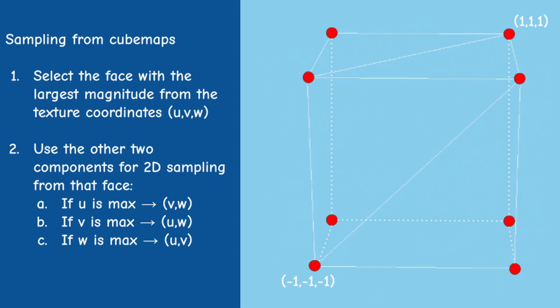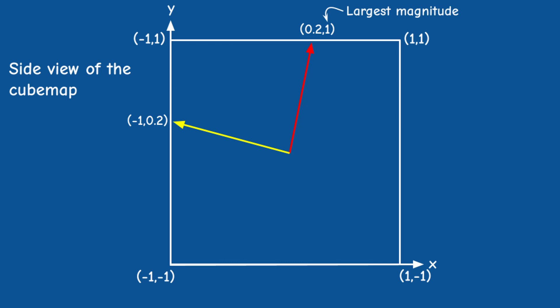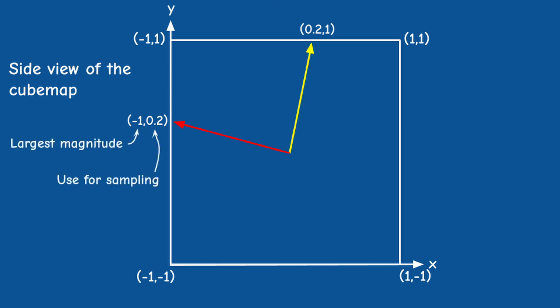Here we have a 2D diagram of the X and Y axes and two direction vectors: (0.2, 1) and (-1, 0.2). In the case of the first vector, the largest magnitude belongs to the positive Y axis, so that is the chosen face and X will be used for sampling along that edge. In the case of the second vector, the largest magnitude is the negative X, so Y is used for sampling. The same concept extends to 3D as well.